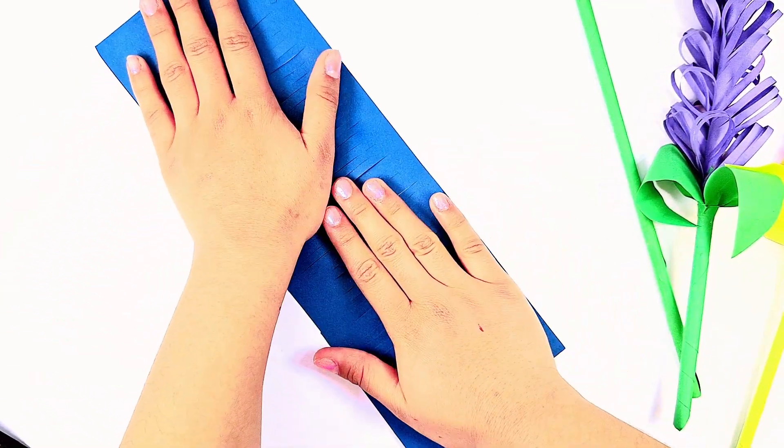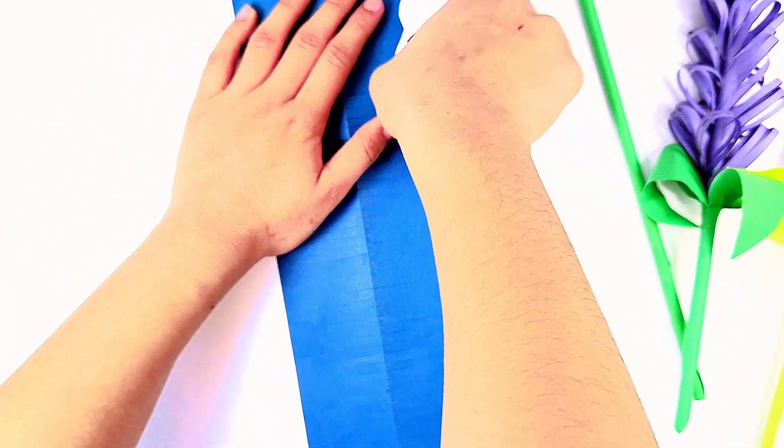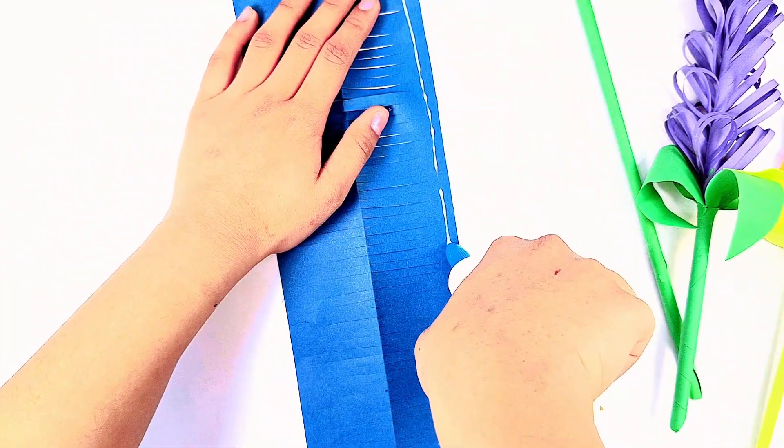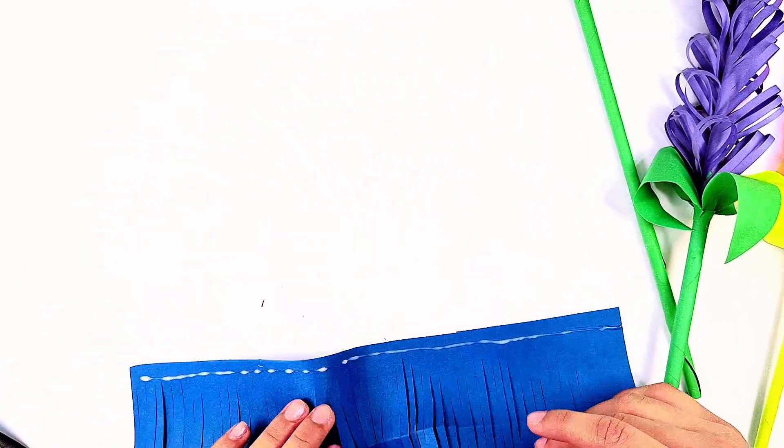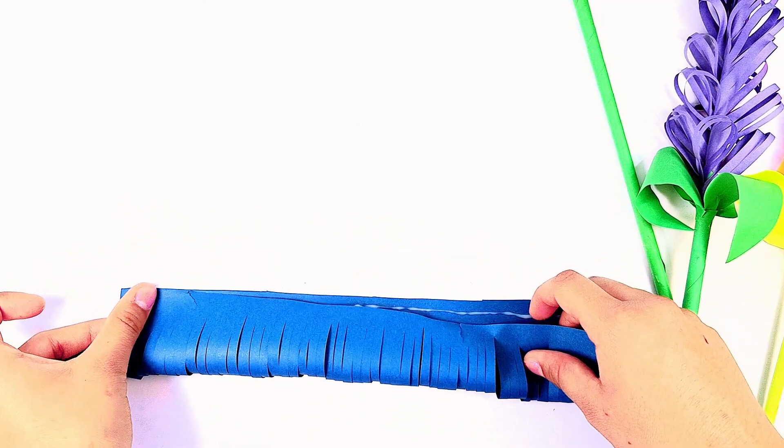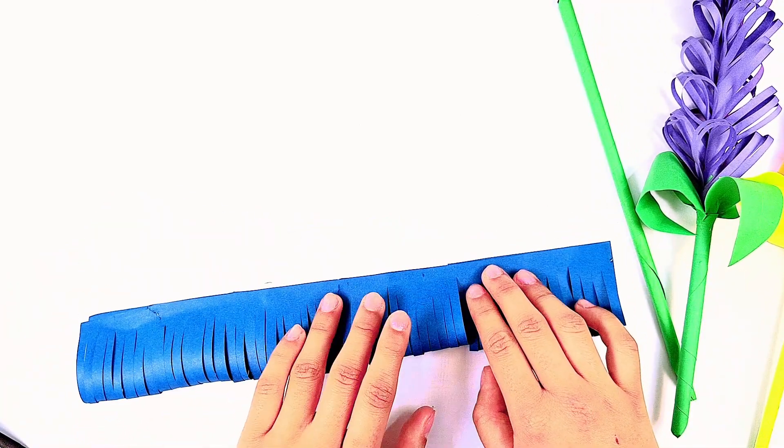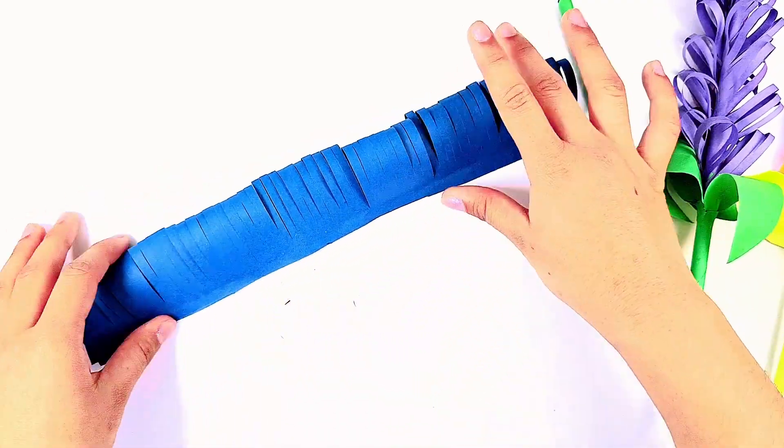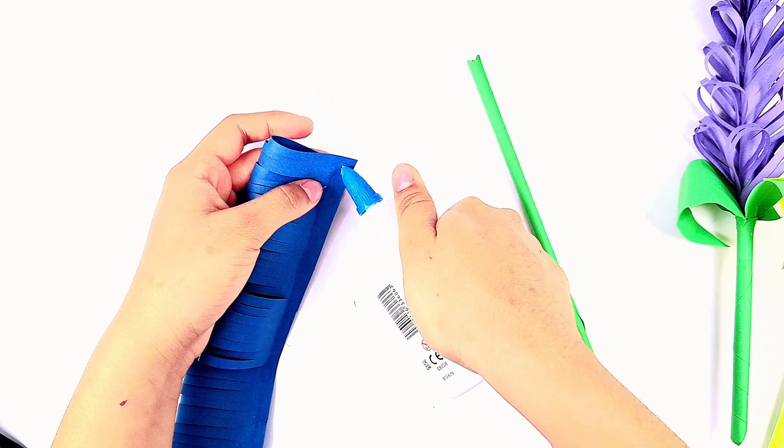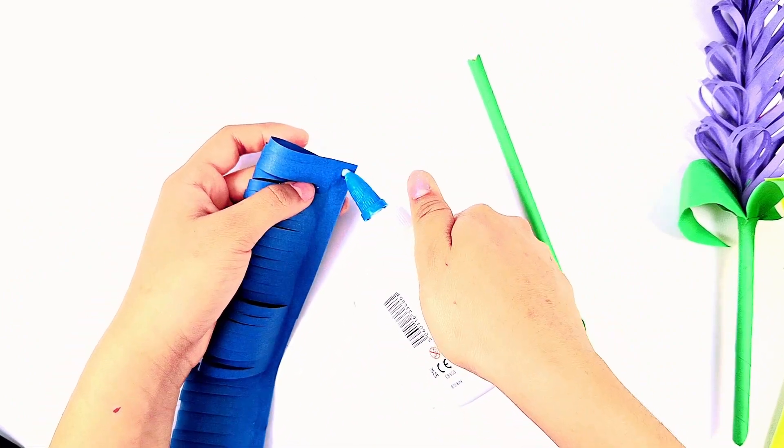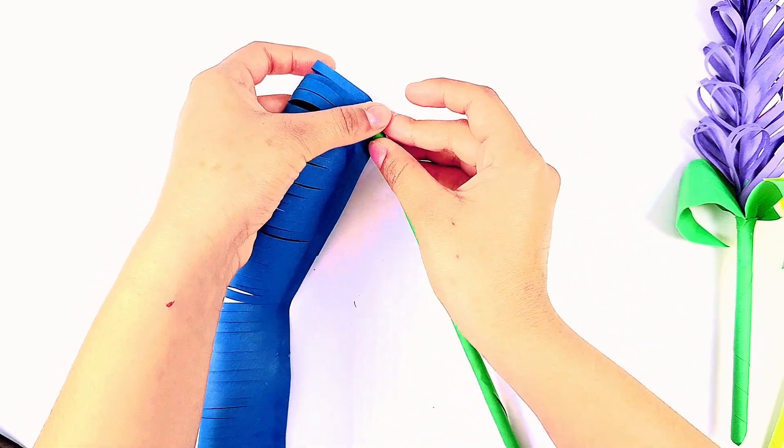Unfold the piece of paper and then fold it the other way, then glue it down. After you've done that, wrap it around the stem.